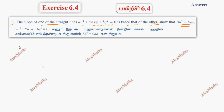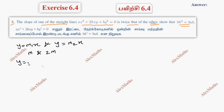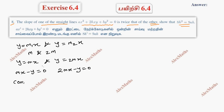Usually, in the pair of lines passing through the origin, the separate equations are y = M1·X and y = M2·X. But here, the slope is twice the other, so M1 = 2M and M2 = M. So the separate equations are y = 2MX and y = MX.